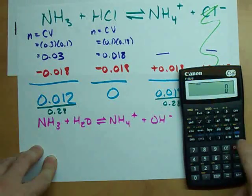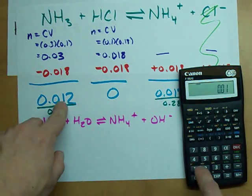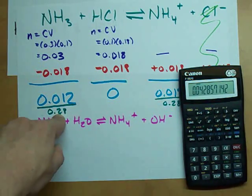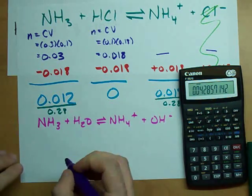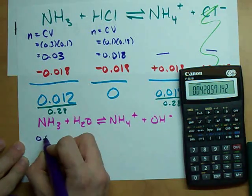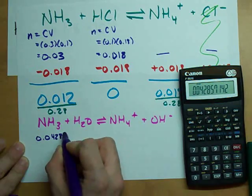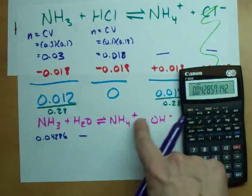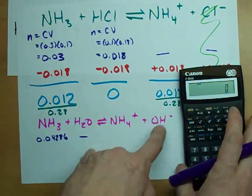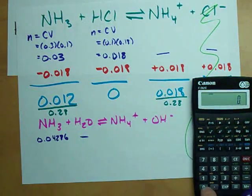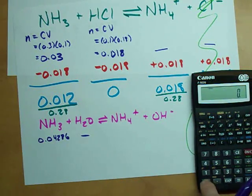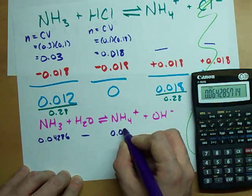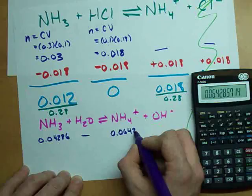Let me do that here for you: 0.012 divided by 0.28, moles divided by liters = moles per liter. My initial concentration of ammonia is 0.04286. Water doesn't matter in equilibrium because it's a liquid—we only include aqueous and gases. The concentration of NH4+ is 0.018 divided by 0.28, and my initial concentration of ammonium is 0.06429.